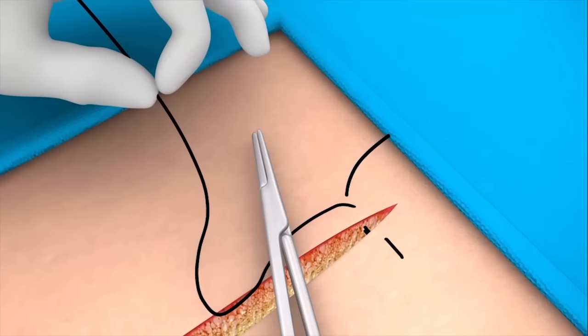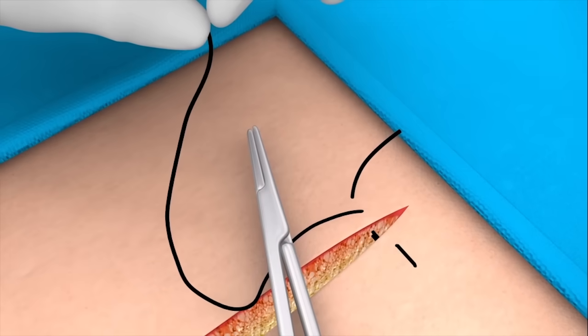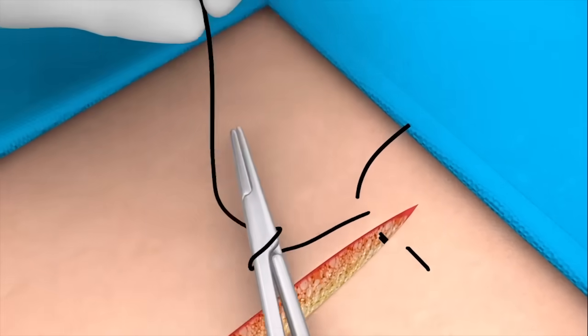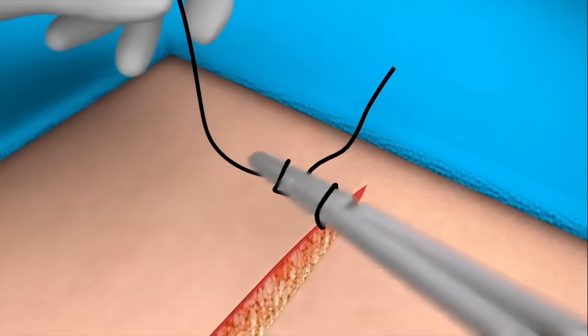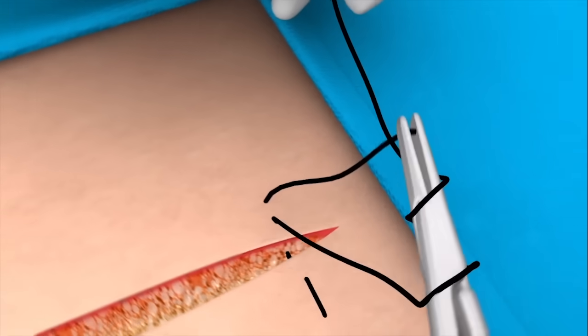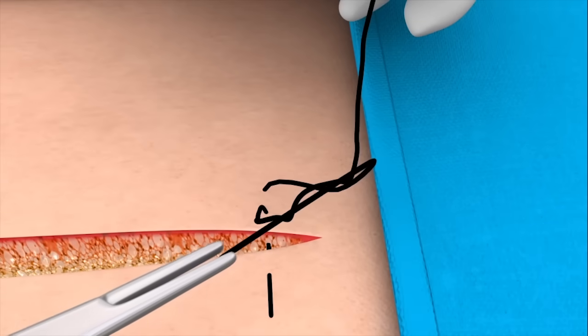When tying the knot, make a double forward throw first by wrapping the suture twice around the tip of the needle holder. Grasp the end of the suture with the needle holder and pull it through the loops as shown.